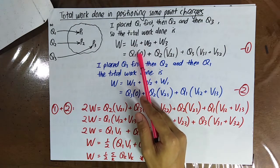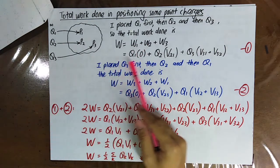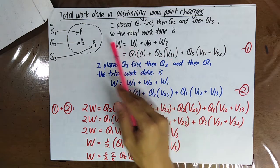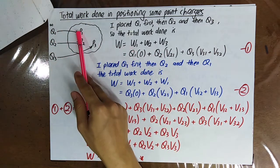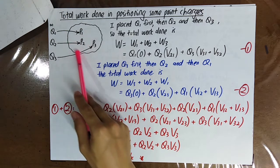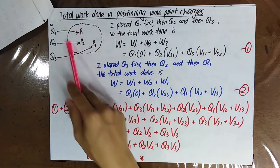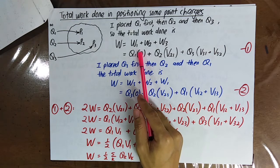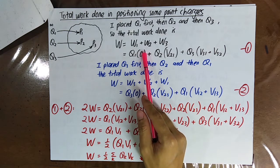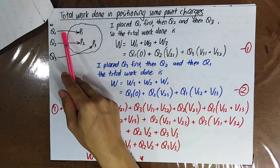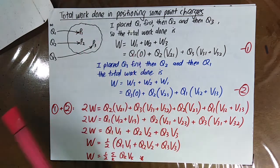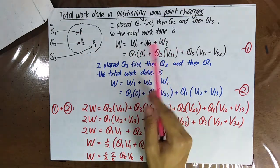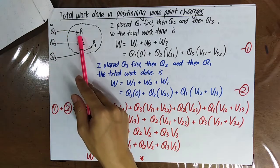W equals qV. When you are bringing q1 initially, there are no other charges here, so the electric potential felt by q1 at p1 is zero. That means you didn't do any work to bring the first charge.